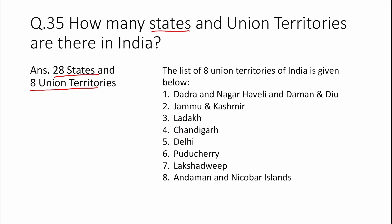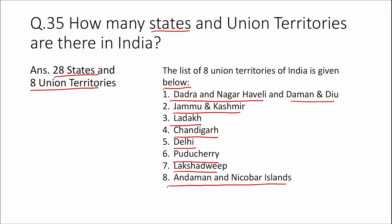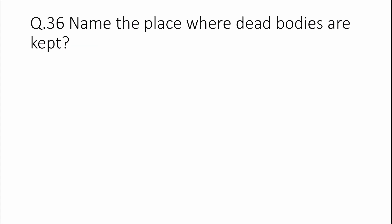The list of eight union territories of India includes Dadra and Nagar Haveli and Daman and Diu, Jammu and Kashmir, and others. Question 36: Name the place where dead bodies are kept.